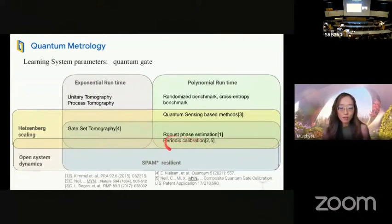In fact, Google, our team at Google pioneered the method of theoretic calibration. It is a multi-parameter generalization of robust phase estimation. And it's the only algorithm to our knowledge that achieves Heisenberg limit, polynomial runtime, and can be adapted to learn open system and closed system dynamics, and is SPAM resilient.